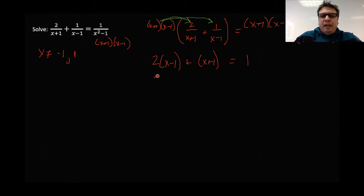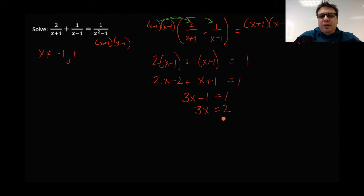So now I've got two x minus two plus x plus one is equal to one. Cleaning up the left side: three x minus one equals one, so three x is equal to two, which means x is equal to two thirds.